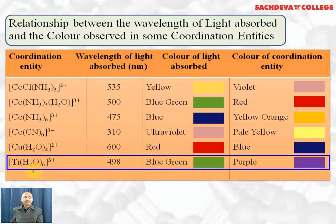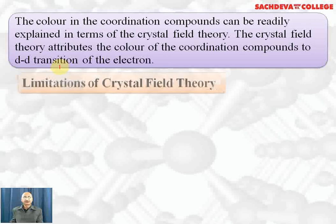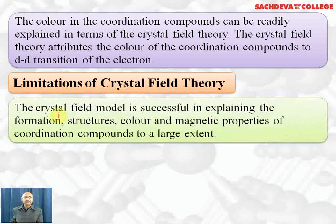Titanium with six water molecules (Ti³⁺) absorbs 498 nm (blue-green) and appears purple. The color in coordination compounds can be readily explained in terms of Crystal Field Theory. CFT attributes the color of coordination compounds to d-d transitions — electrons jump from t₂g to eg orbitals by absorbing light from the visible region and radiate the complementary color.